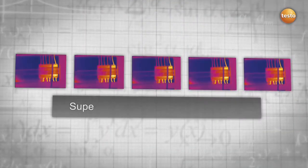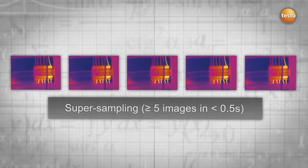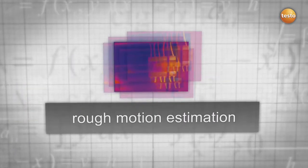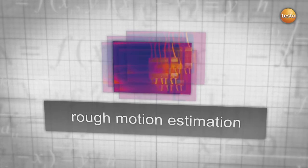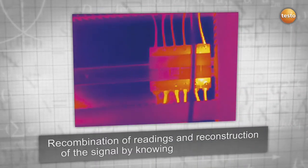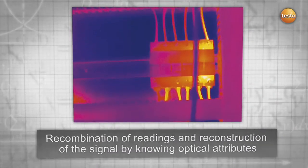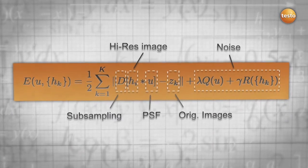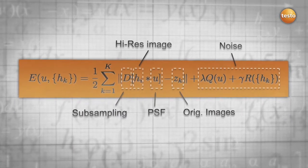The technology works as follows. The thermal imager takes multiple images in less than 0.5 seconds. They are combined in one high-resolution image, uniting the technologies of supersampling and deconvolution. This process is reflected in the formula that was exclusively developed for the Testo super-resolution technology.